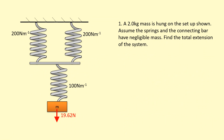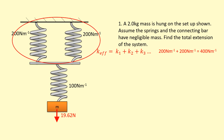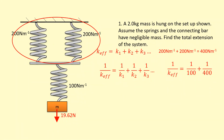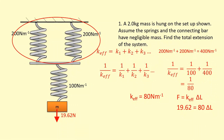There is an alternative method using effective spring constant formulas. The two top springs are in parallel, so we add their constants: 200 + 200 = 400 N/m. That 400 N/m spring is then in series with the 100 N/m bottom spring, so: 1/k_eff = 1/100 + 1/400 = 1/80, giving k_eff = 80 N/m. Applying Hooke's Law with force 19.62 N and k_eff = 80 N/m gives the same total extension as before.